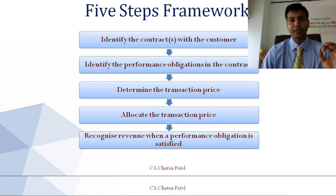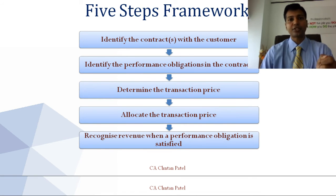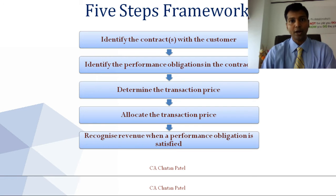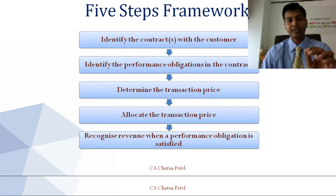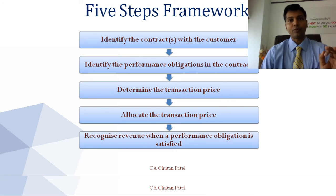The first step is to identify the contract, and the second step is to identify the performance obligations of the contract, meaning for each transaction one needs to identify what the obligation to perform is. Then each performance obligation must be accounted for separately by allocating the transaction price — the price agreed between buyer and seller — to each performance obligation. IFRS 15 and Ind AS 115 are very clear about the steps for recognition of revenue.